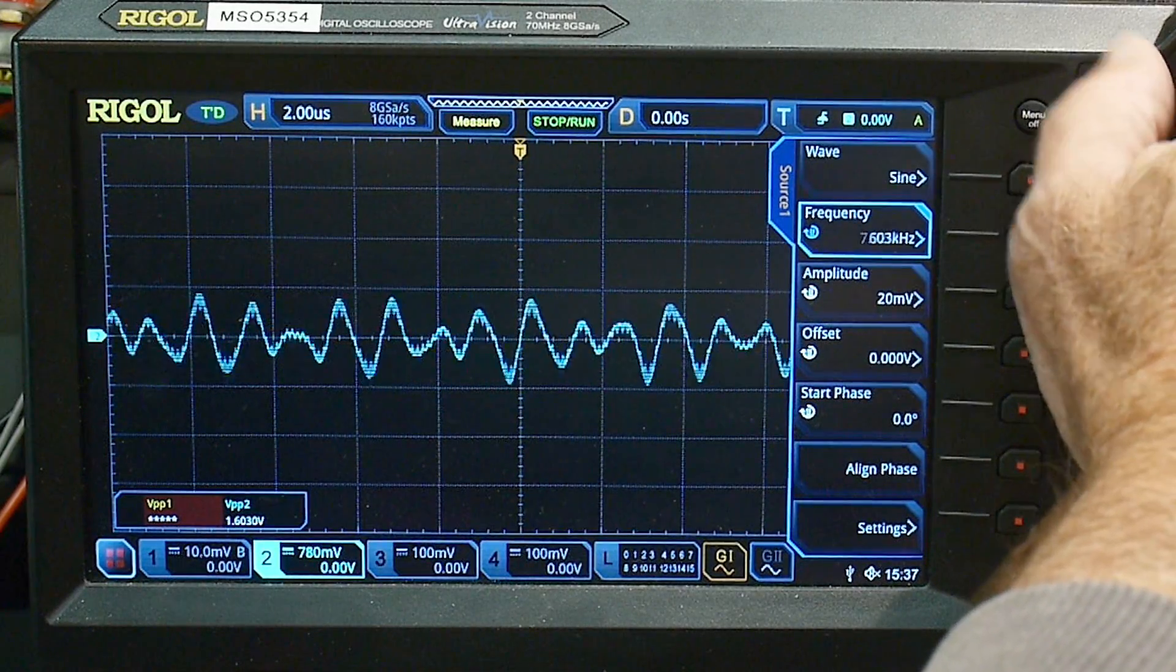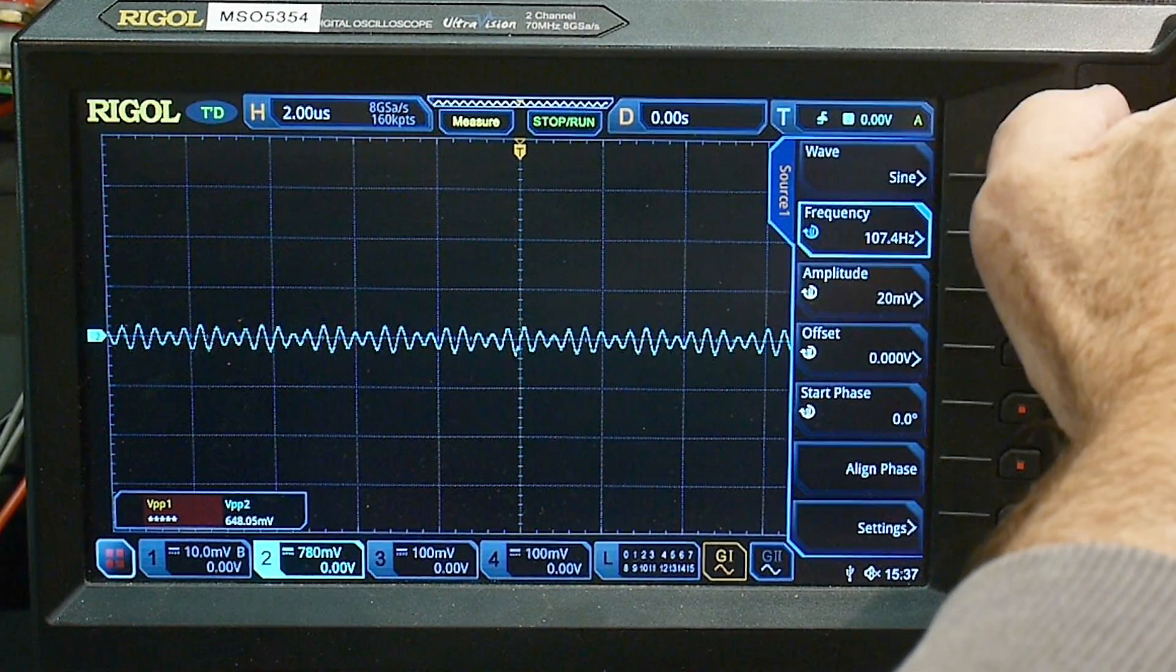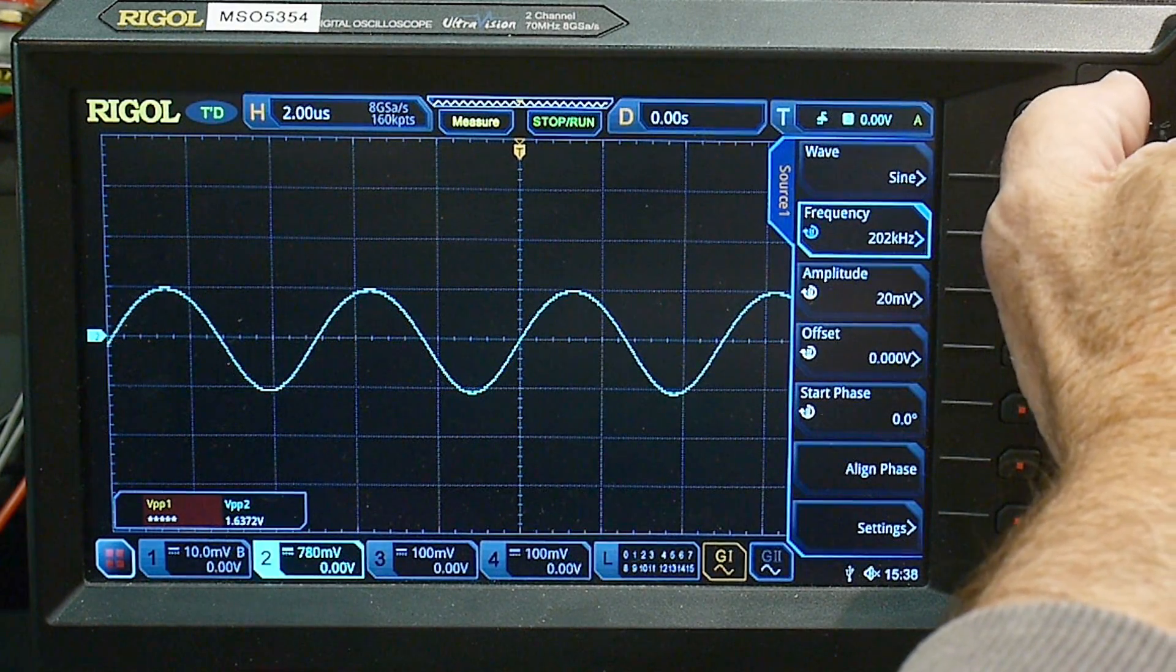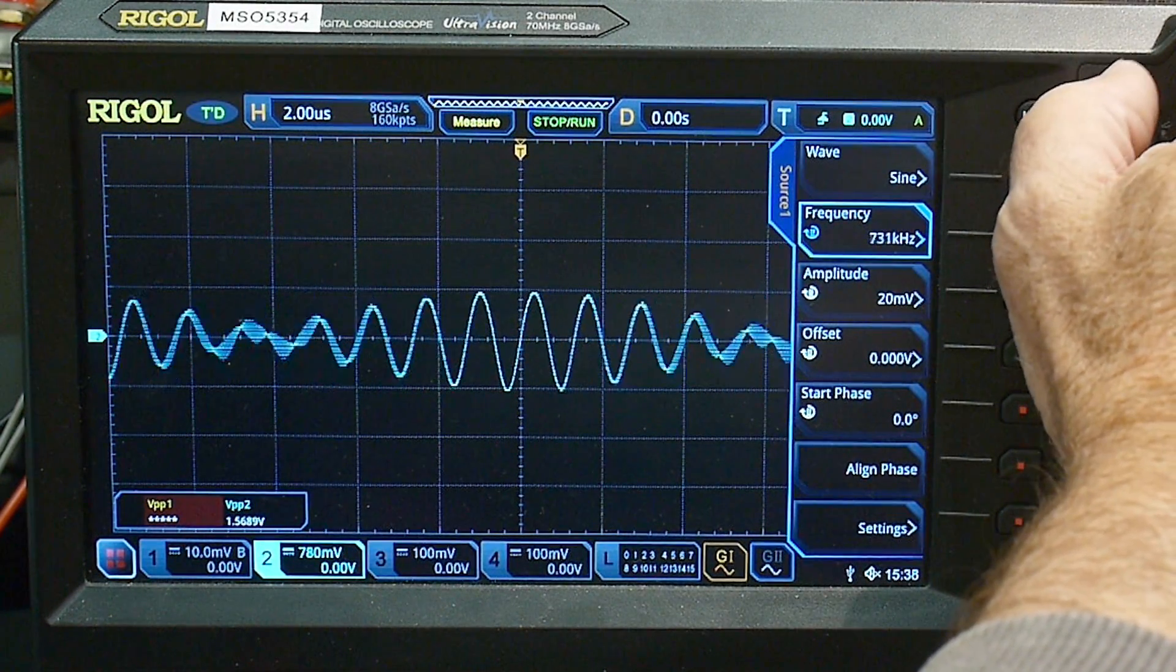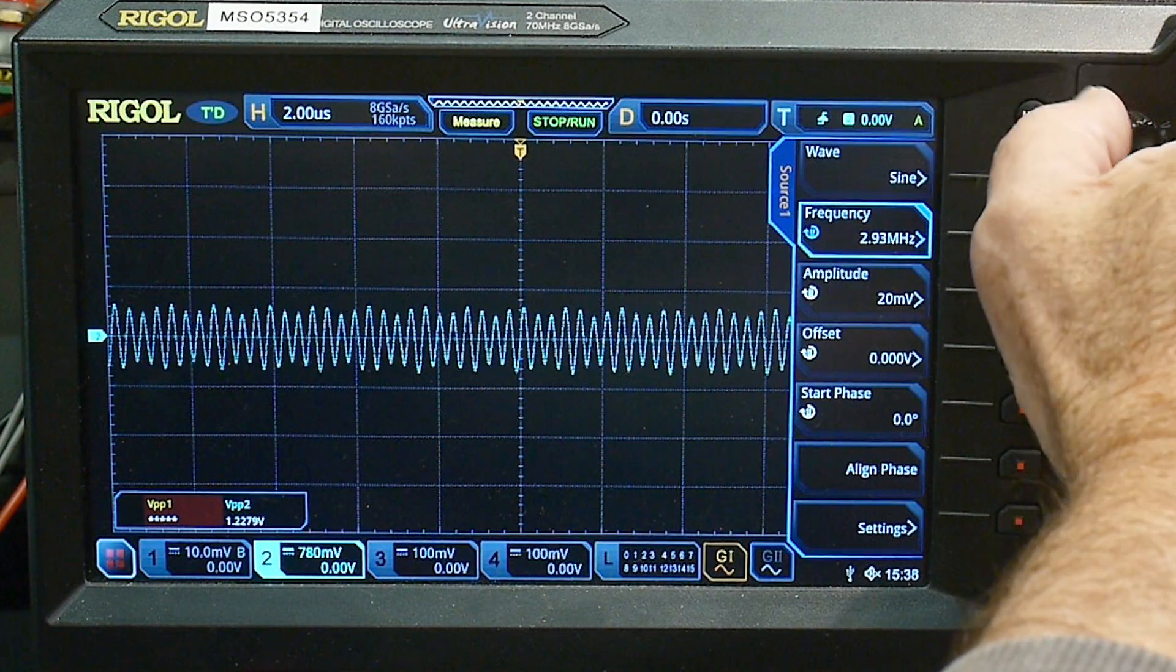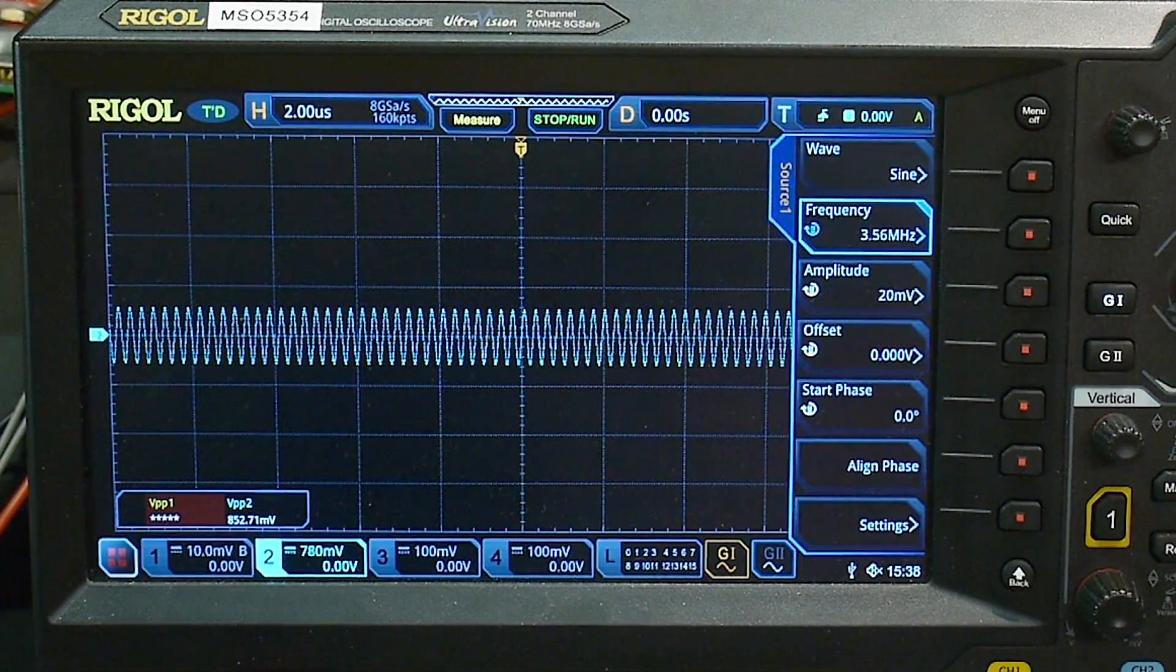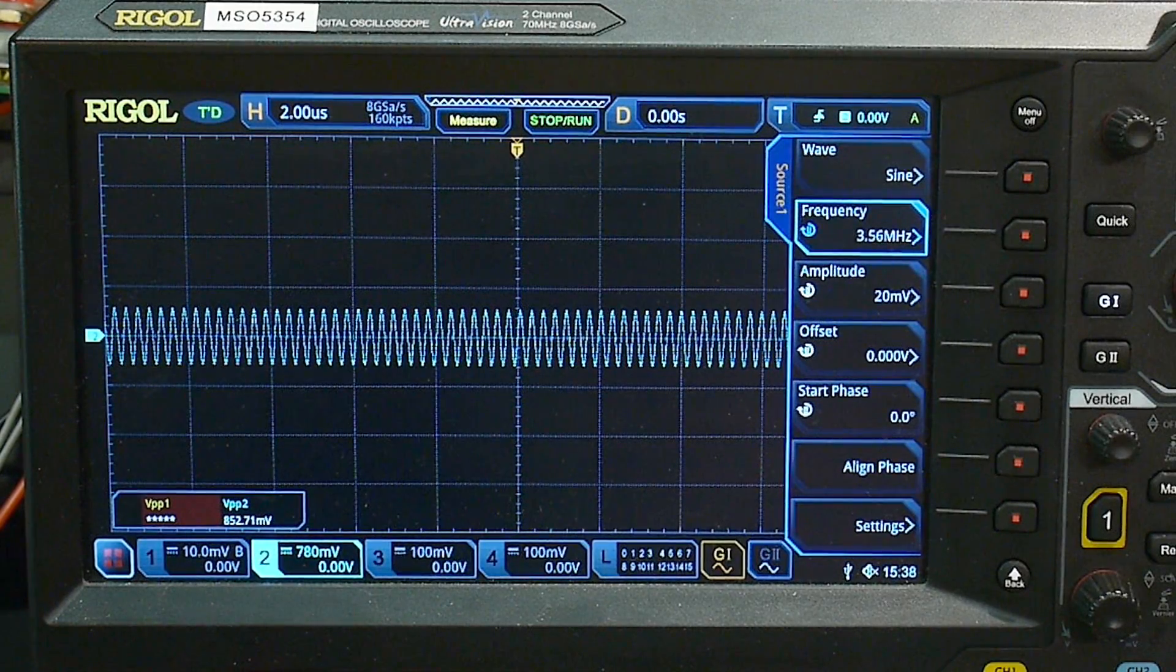Now what I'm going to do is I'm going to set the gain of this channel so that the sine wave goes plus or minus one division. So now I'm going to speed up. So I'm going to speed up 100 kilohertz, 200 kilohertz. And we're just going to keep going until we're starting to get smaller. Now I'm at two megahertz and we're getting smaller. So let's say right about there, right about 3.5 megahertz. Our output is about half of what it used to be.